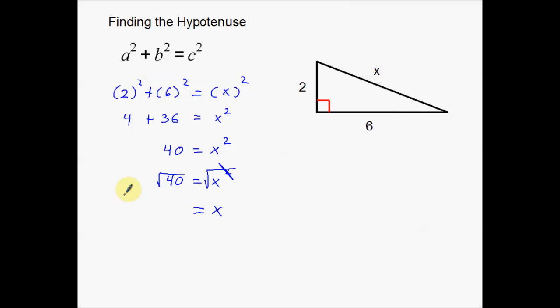Now I'm going to get into simplifying a radical. This square root symbol is also called a radical — that's the actual name of the symbol. So we're going to simplify the radical. The square root of 40 is too big a number to have underneath the radical, so I'm going to reduce it. I'll show you a wrong way and then the right way — it'll make sense in just a moment.